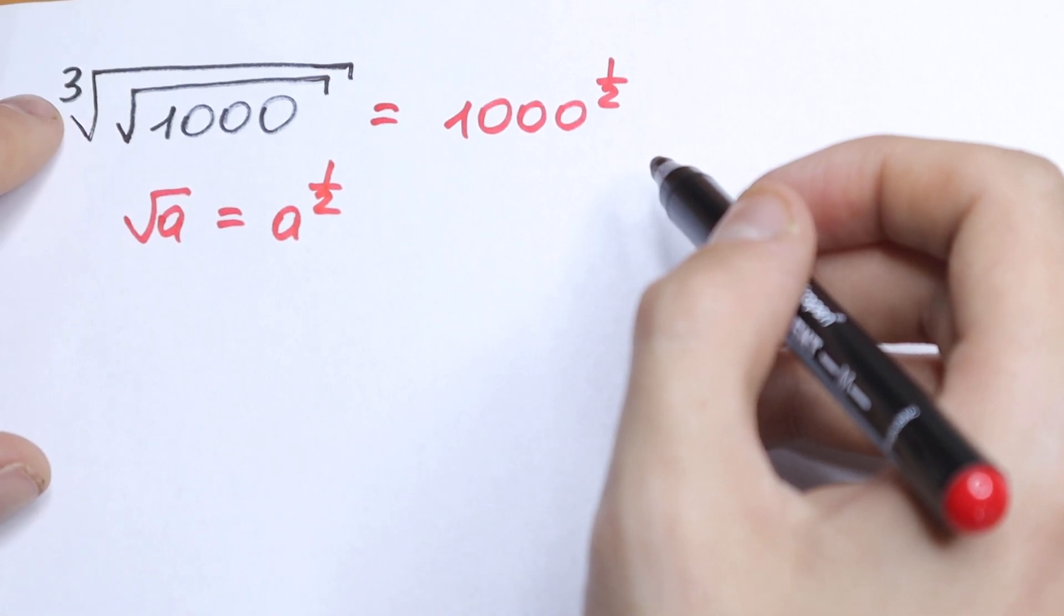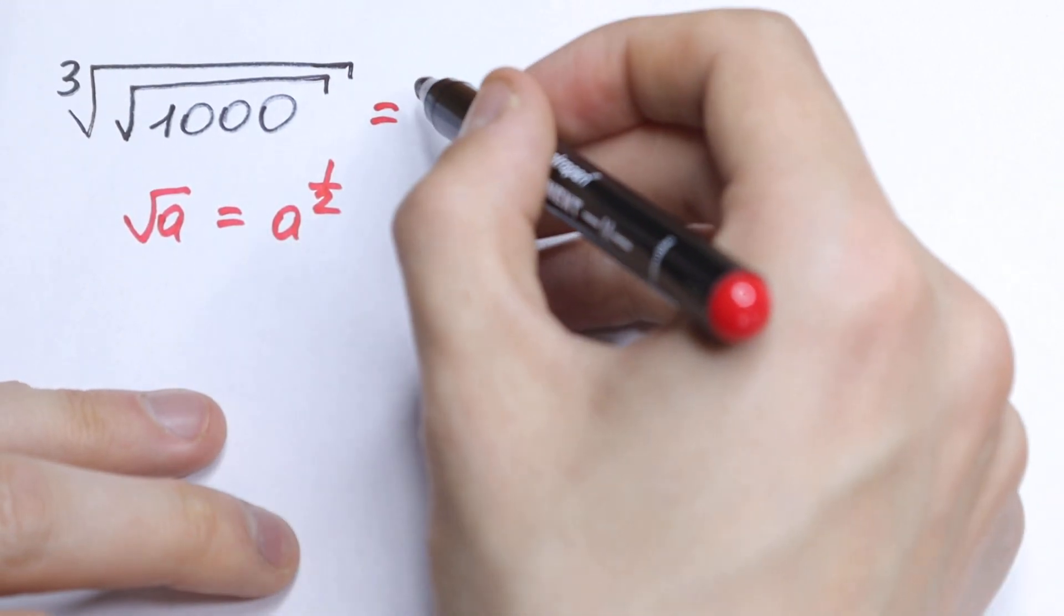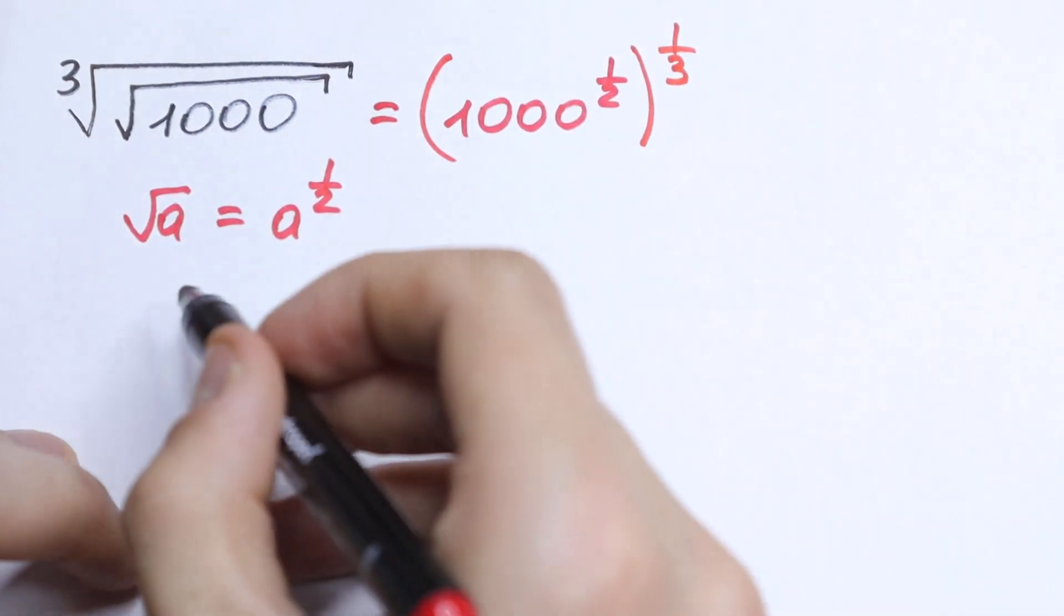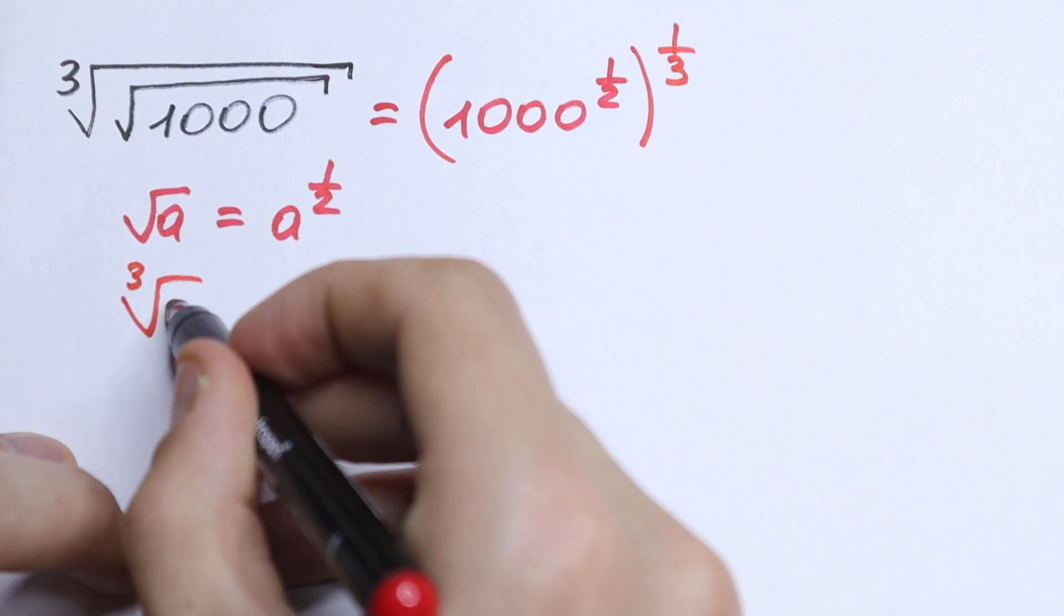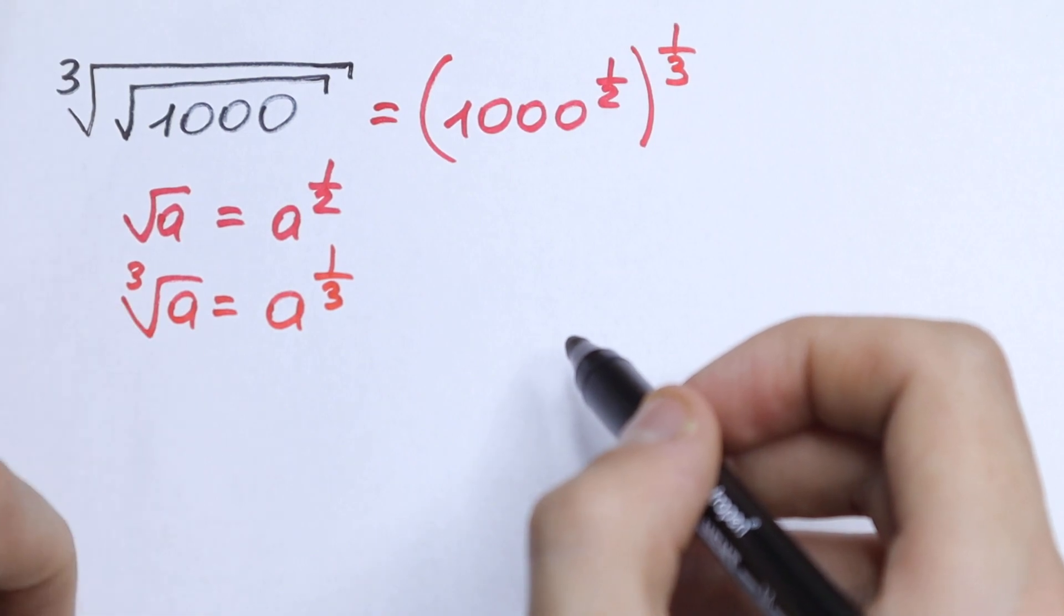But outside of here we have cube root. So as a result we need to raise this to the power 1/3. Because we know if we have, for example, cube root of a, we can write it as a to the power 1/3.